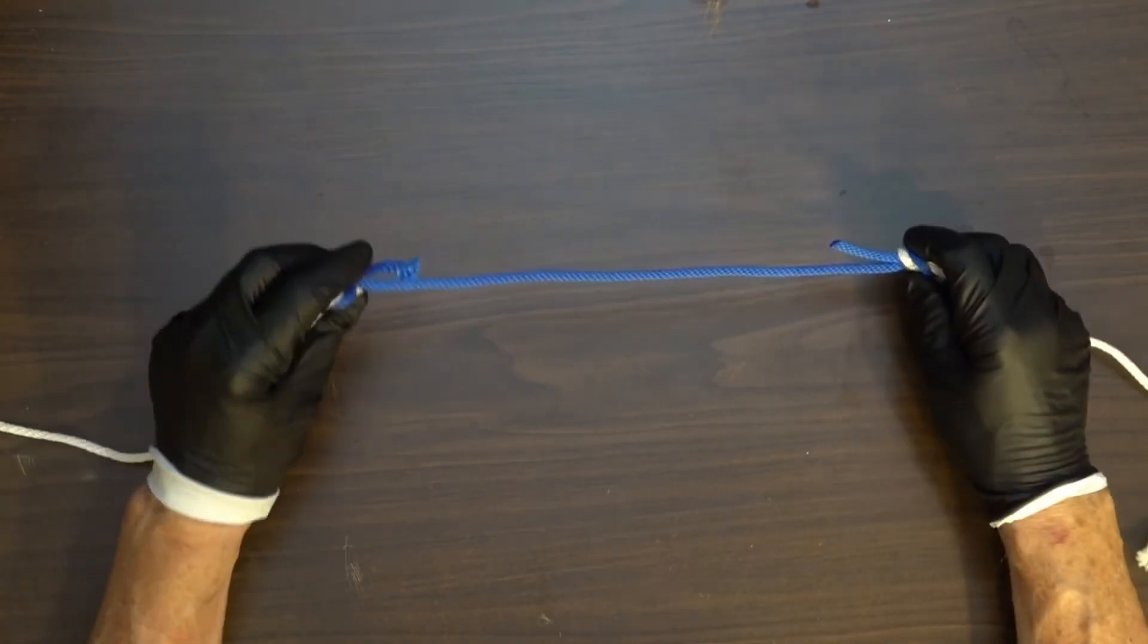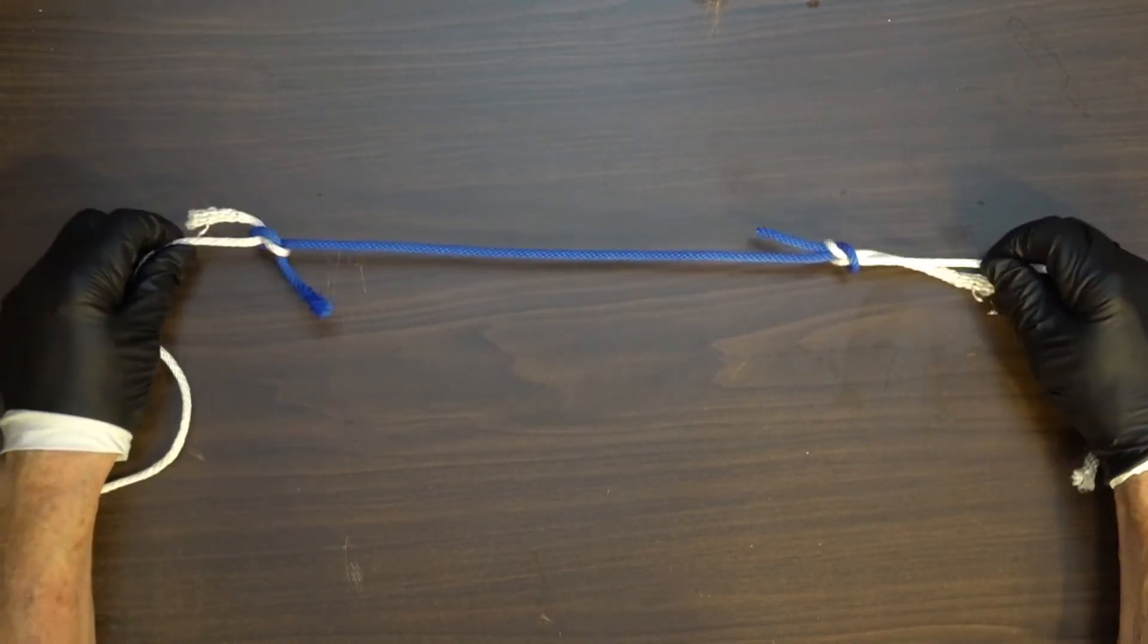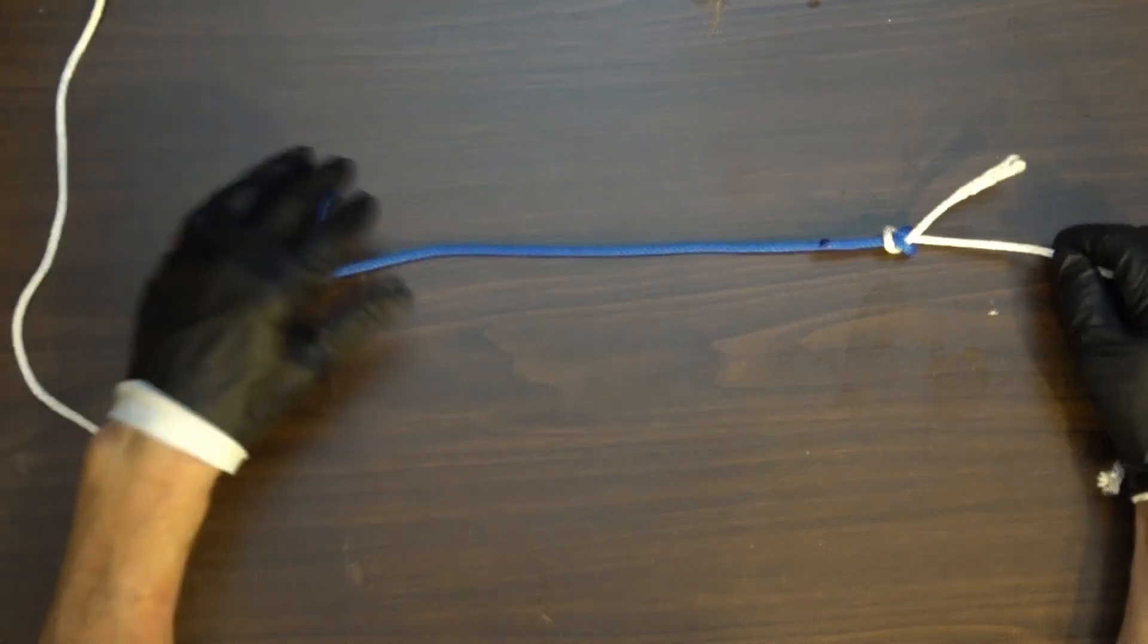Alright, we've got our granny knot tied over here, square knot here. Now let's pull on them. Granny knot comes loose.